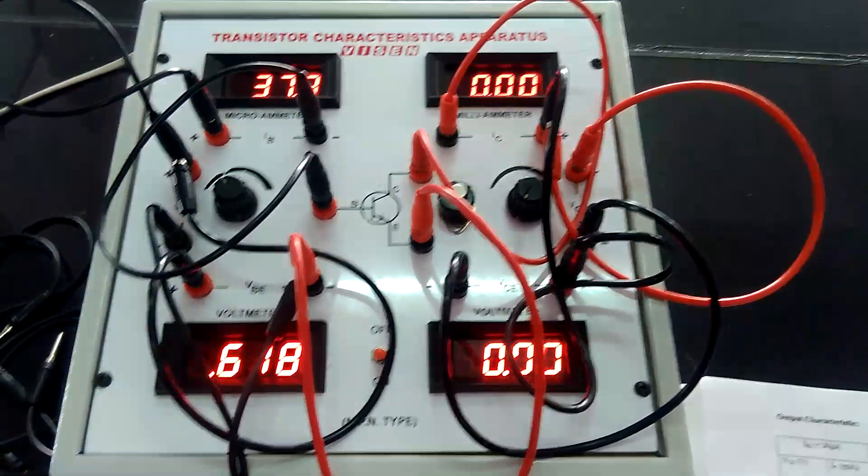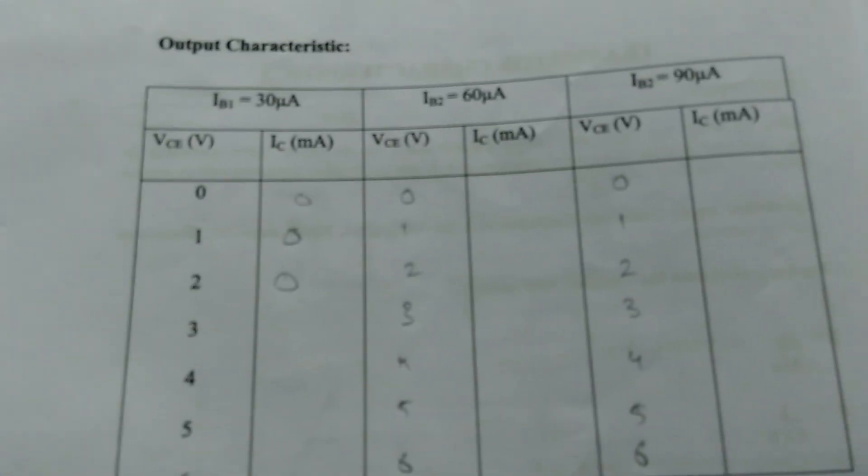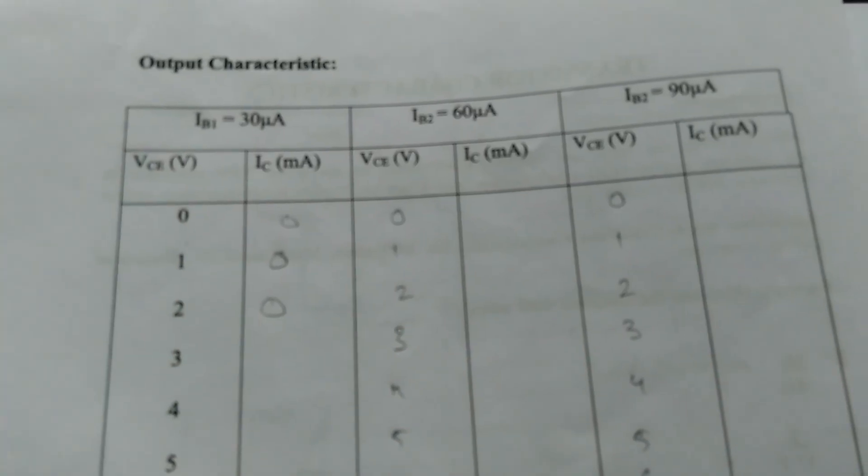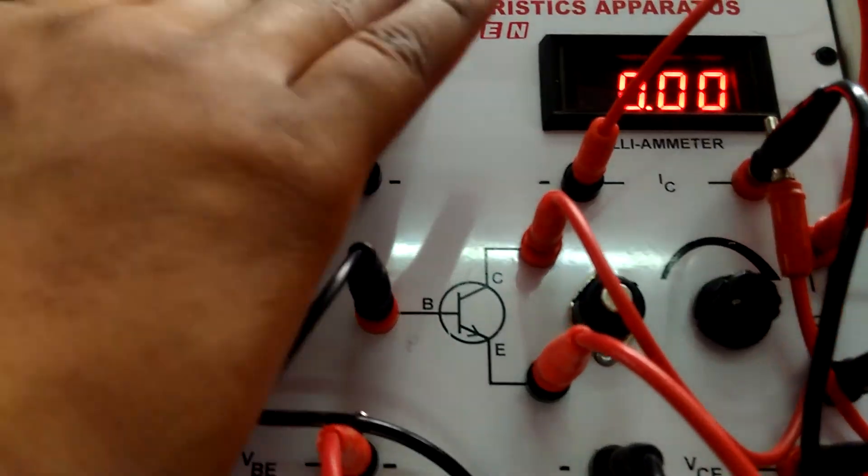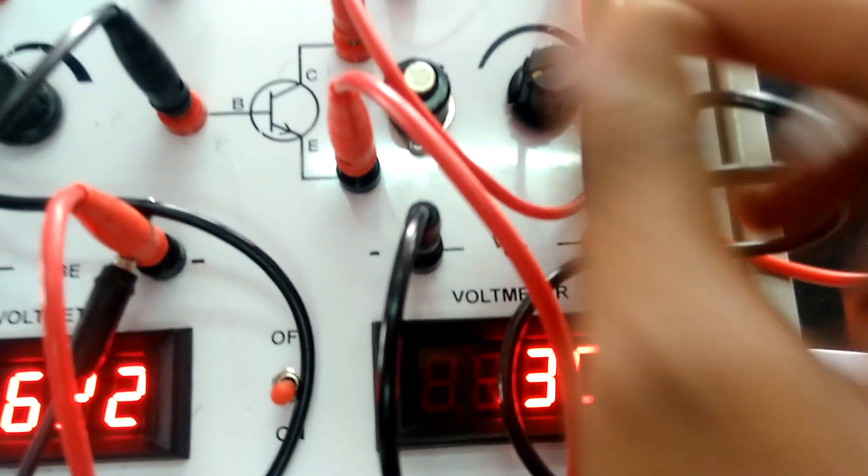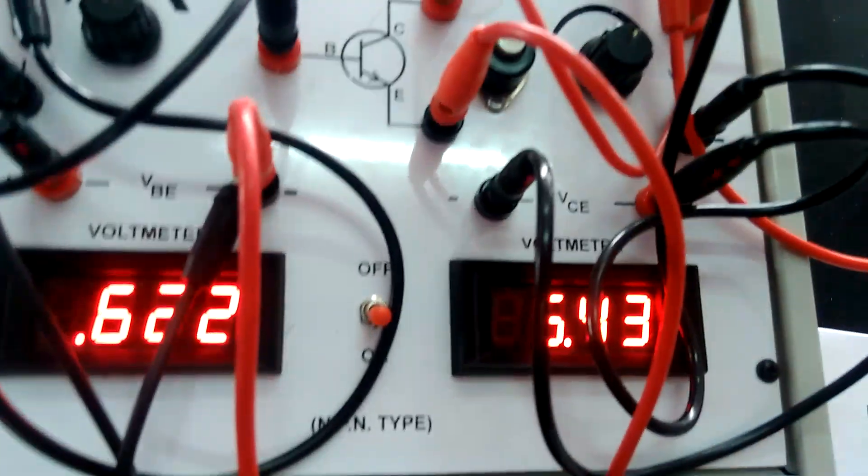And change VCE like 0. First we should do 30, then 60, then 90. Only this should be changed, others should be constant. VCE should be changed, okay. VCE 1 up to 6. We should do up to 6, 0 to 6, okay. That's it, thank you.